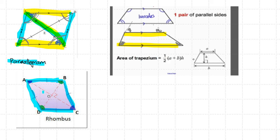The rhombus does not have two pairs of parallel lines, but all sides are the same length. Another cool property: the diagonal cuts the angle into half. So if you know the full angle, you know each half. Likewise for the other diagonal angle.